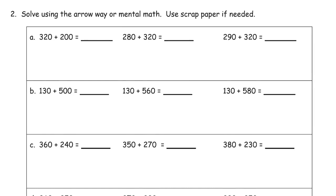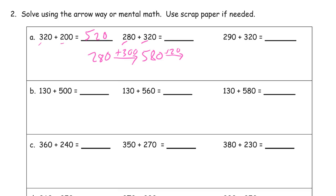We can do this mentally or write it down the arrow way. For 320 plus 200, we can do this one mentally because we're just looking at the hundreds digits — that's 500, then add the 20. For 280 plus 320, we want to do this one arrow way: 280 plus 300 is 580, then plus the 20 gives 600.